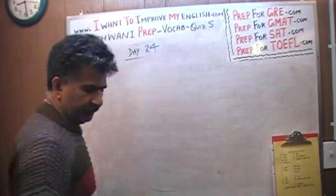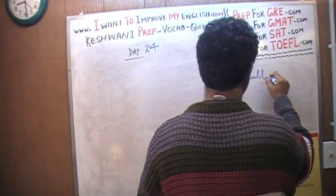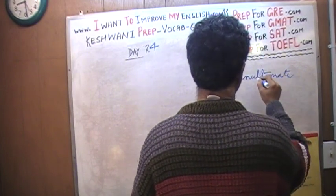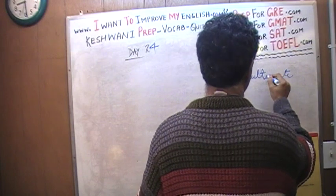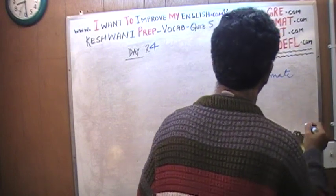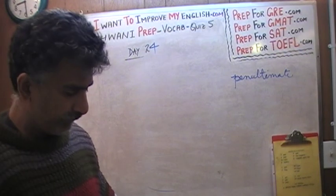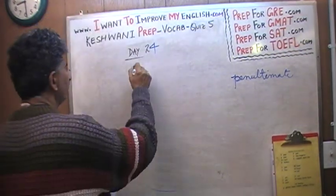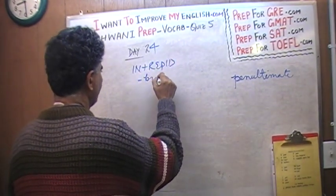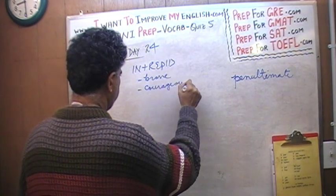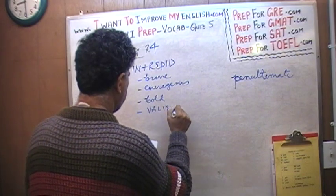Day number 24 — the penultimate day. Penultimate means second to last. The very first word we covered on day 24 was in fact 'intrepid,' which means to be brave, to be courageous, to be bold, and finally to be valiant.